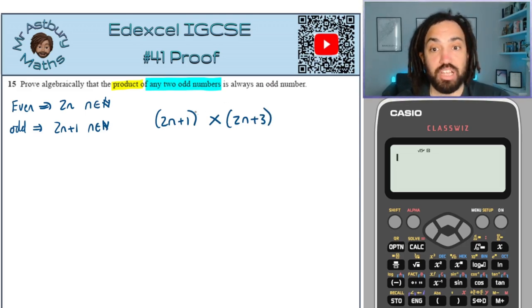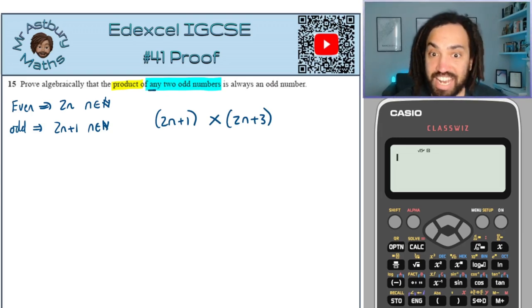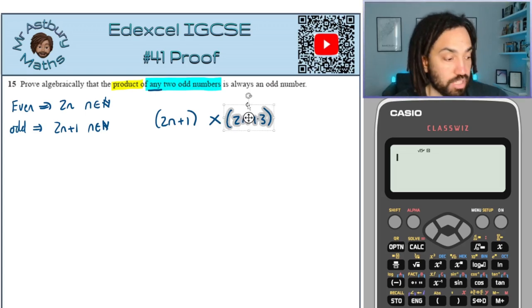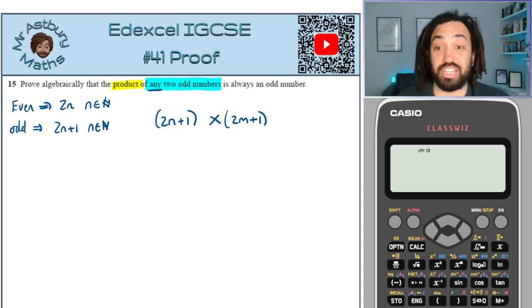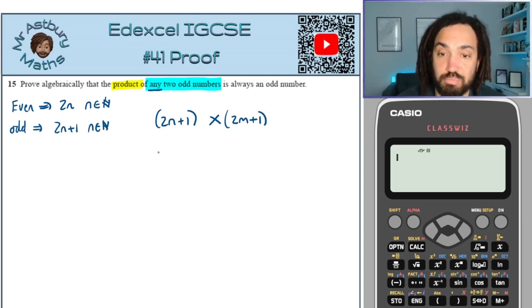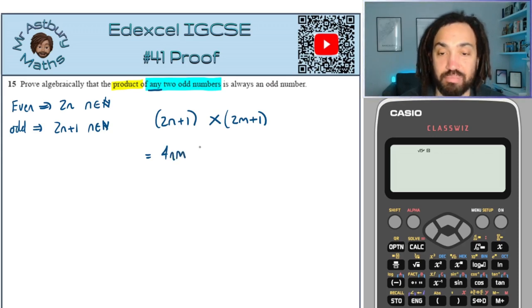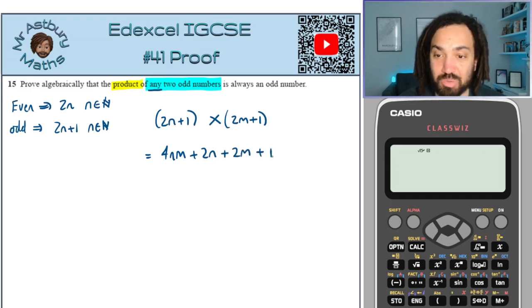Yes, 2n plus 3 is another odd number, but it's specifically the next odd number along. This says any 2 odd numbers — it doesn't say 2 consecutive numbers, so we can't use that. Instead we have to use another odd number, which we can define as 2m plus 1, or any other letter you like. Now we can multiply these together: doing the brackets we get 2n times 2m which is 4nm, then 2n times 1 which is 2n, then 1 times 2m, and 1 times 1 is 1.